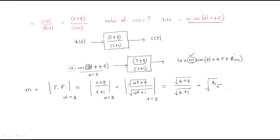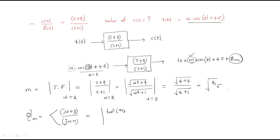Now we find φm. The phase formula is: φm = phase of (jω+2)/(jω+1) = tan⁻¹(ω/2) − tan⁻¹(ω/1). We substitute ω = 2 into this formula to get the phase of the output.